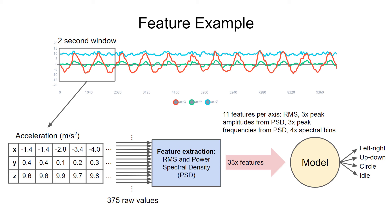Edge impulse is taking 375 raw samples from our two second window and computing a number of features from each axis. We'll send the RMS value, three peak amplitudes from the PSD, three peak frequency locations from the PSD, and four summed bins from the PSD to the model. So rather than have a 375 dimensional input to our model, we have a 33 dimensional input, which is much better.